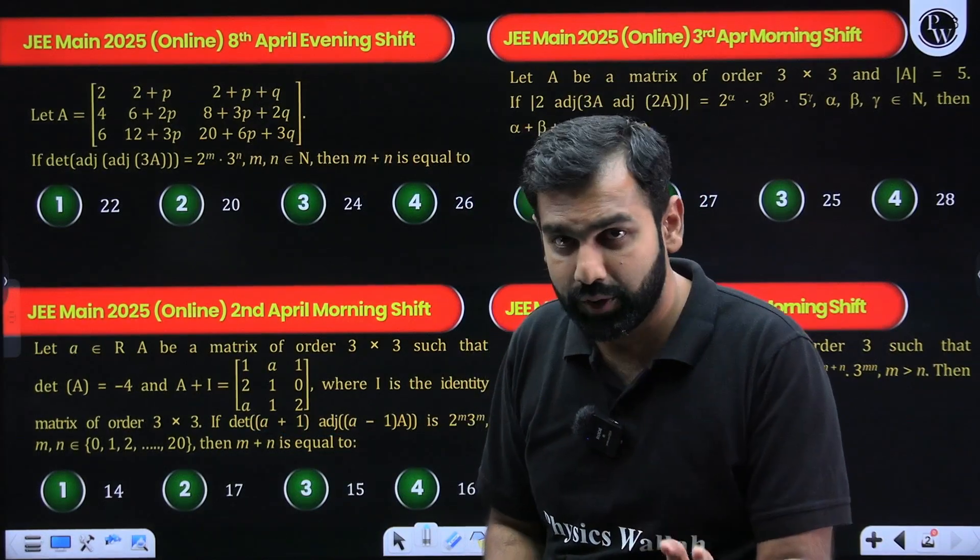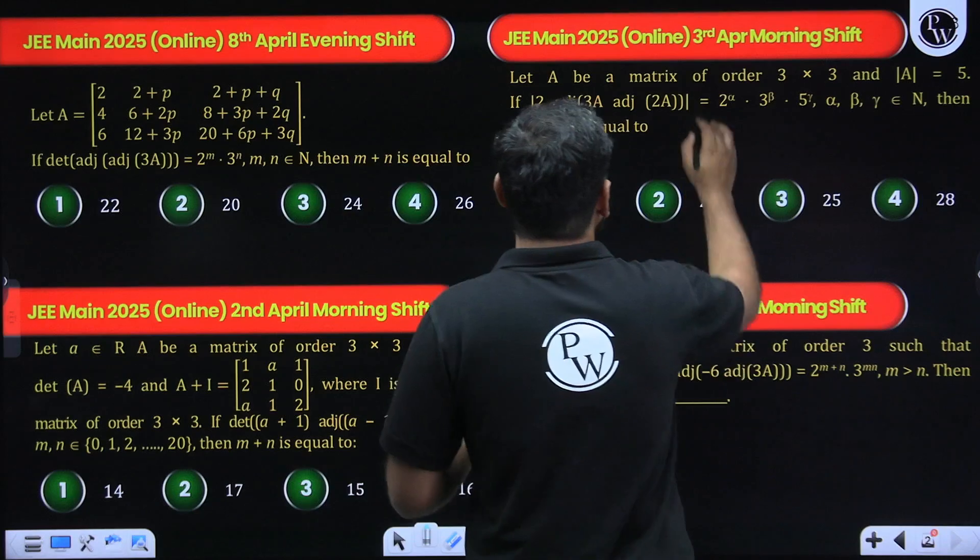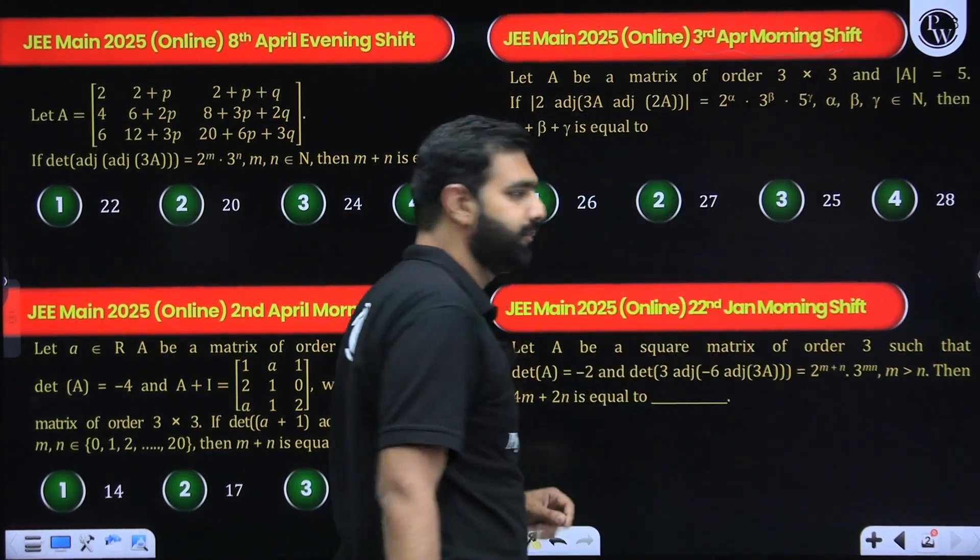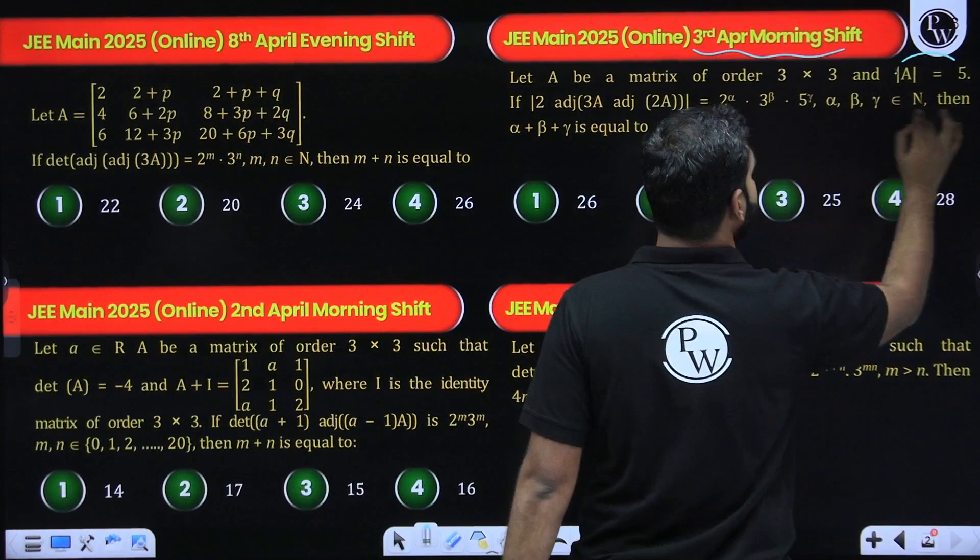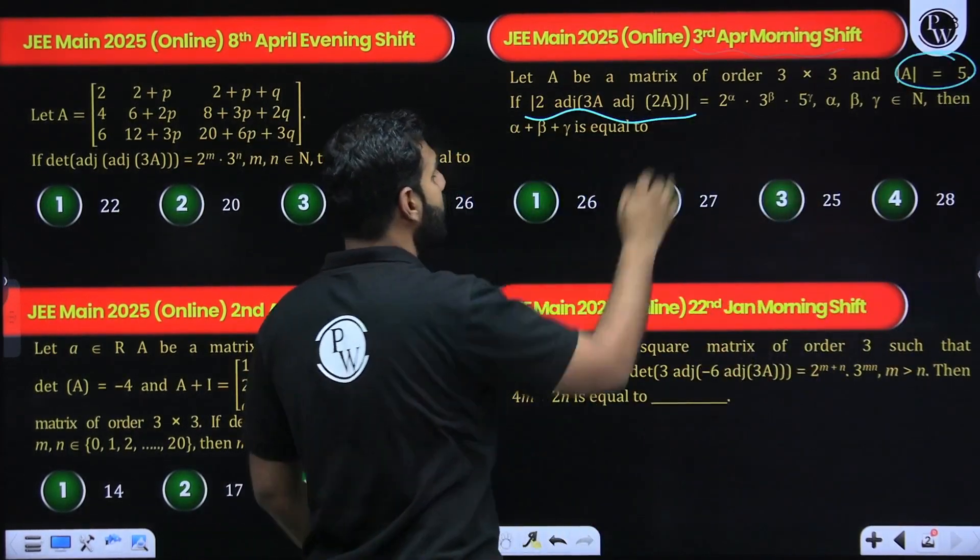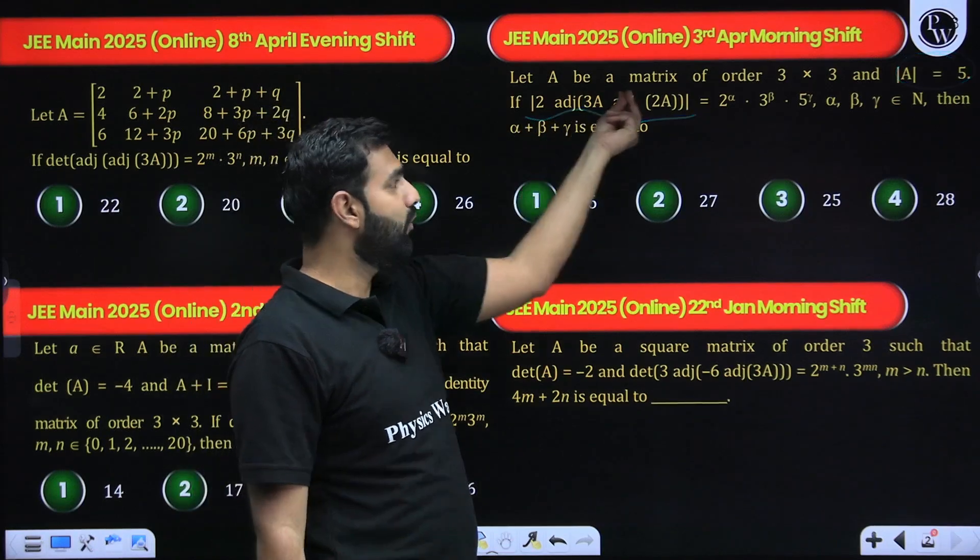I hope you understood the pattern. Now look at 3rd April morning shift: a matrix is given, then its determinant is given, then you need to find out determinant of scalar of adjoint of adjoint of a matrix. Same question, same category of question.